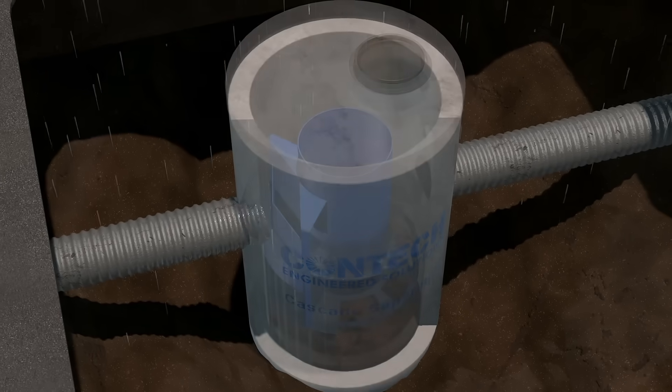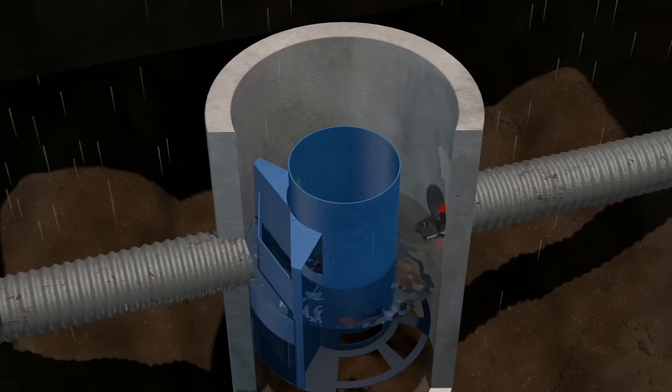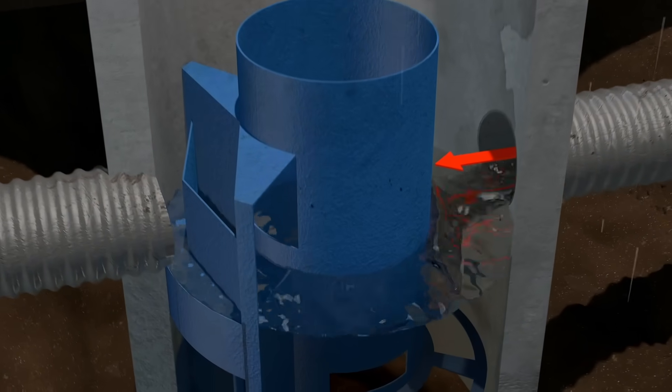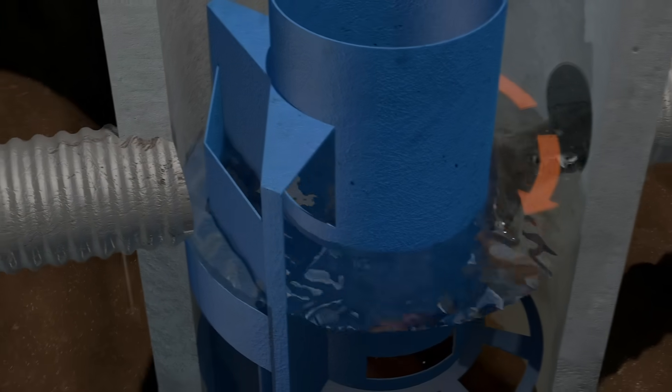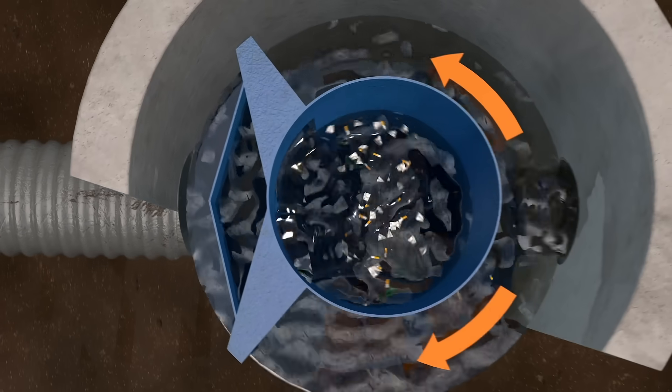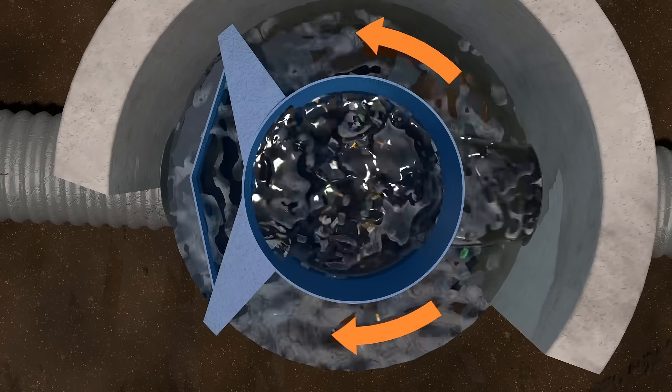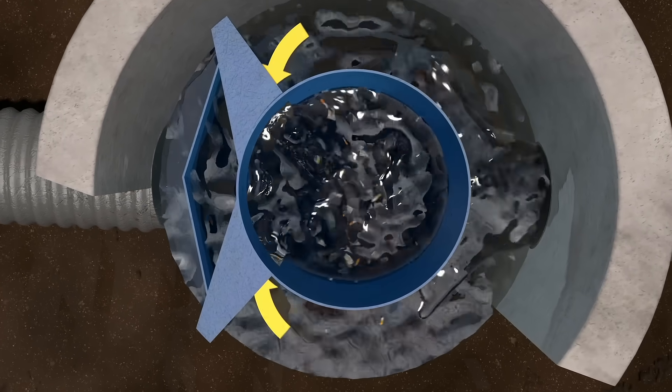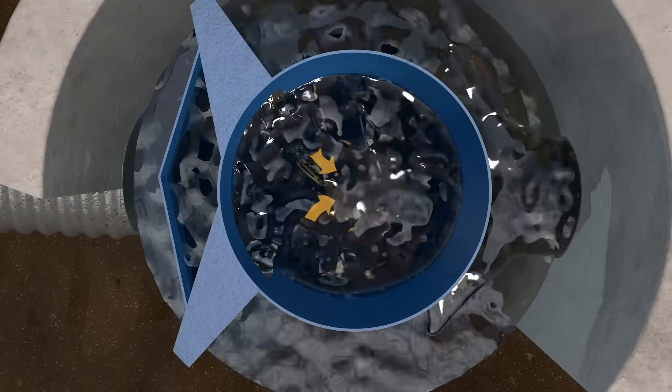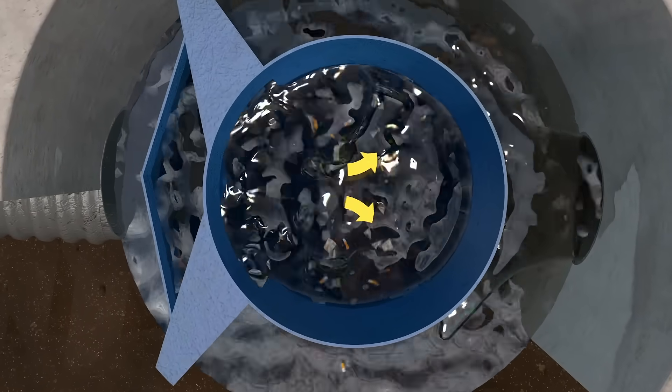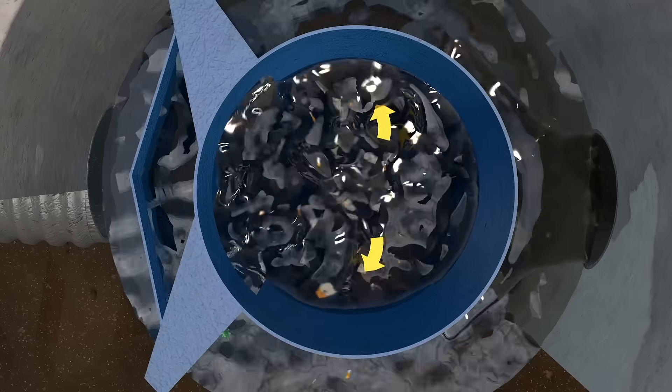The treatment process begins as stormwater enters the system through one or multiple inlets or an inlet grate. After water enters the unit, it is directed to two separate flumes. Water traveling through the opposing flumes enters the center chamber, where vortices rotate in opposite directions, facilitating enhanced particle settling.